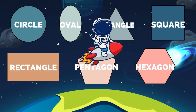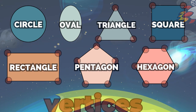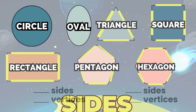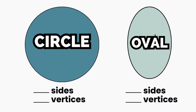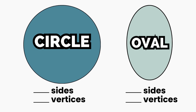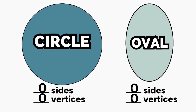Shapes are here, let's take a ride. Count the vertices, count each side. A circle and an oval, smooth all around. No straight sides, no points are found.